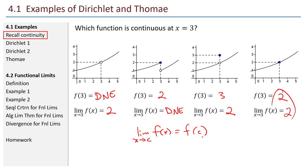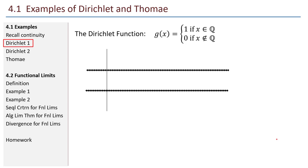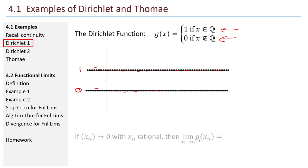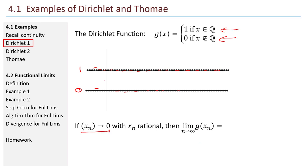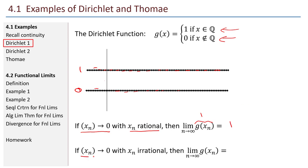Let's take a look at some strange examples. The first one is the Dirichlet function. G of x equals 1 if x is taken from the rationals and 0 if x is taken from the irrationals. Every time my x value is rational, the value is up at 1; every time it's irrational, the value is down at 0. If I have a sequence of x's approaching 0 where all those x's are rational, all the function values will be 1, so the limit is 1. If my x's approach 0 where they are irrational, the function values are all 0, so the limit is 0. The limit of this function as x goes to 0 does not exist.